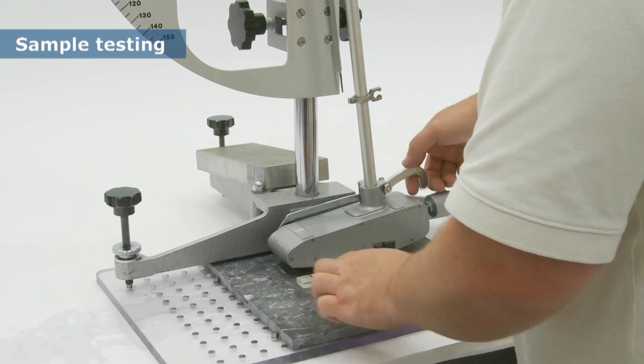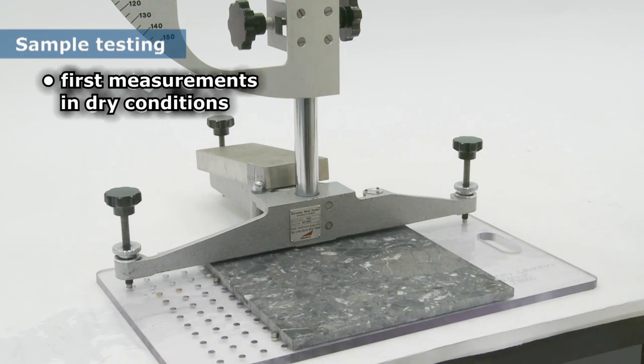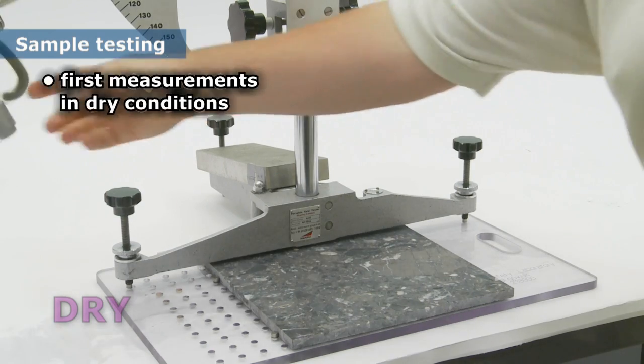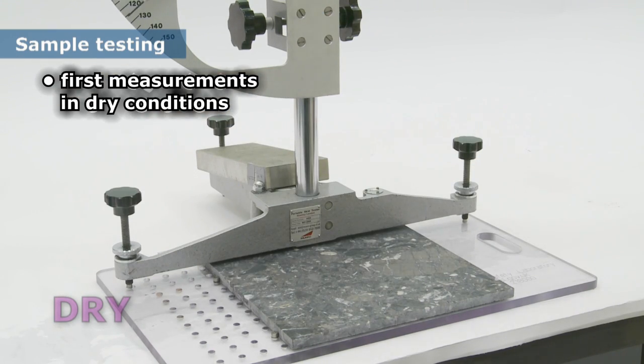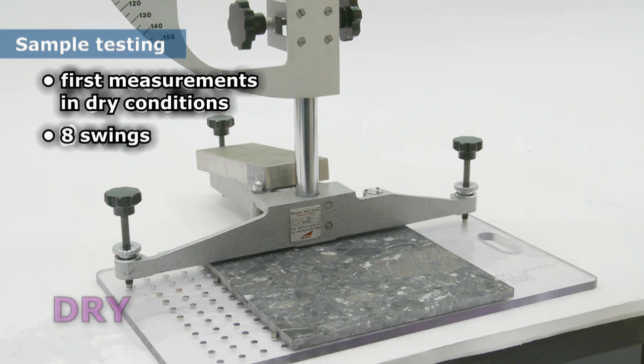The test procedure in the guidelines dictates that the first measurements are taken in dry conditions. A test consists of eight swings. The first three are noted but not included in the calculation of the median.